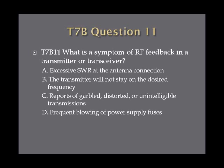Question 11. What is a symptom of RF feedback in a transmitter or transceiver? A. Excessive SWR at the antenna connection. B. The transmitter will not stay on the desired frequency. C. Reports of garbled, distorted, or unintelligible transmissions. Or D. Frequent blowing of power supply fuses.